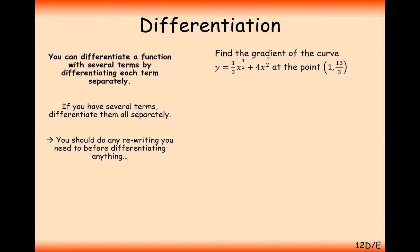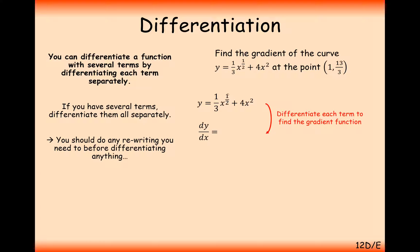Another question: find the gradient of the function y equals one third x to the power of a half plus 4x squared at the point (1, 13/3). We differentiate all functions separately. dy/dx equals a half times a third, which gives us a sixth, and then x to the power of minus one half — reducing the power by 1 — plus 8x.